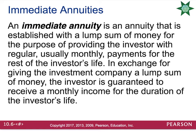An immediate annuity is an annuity established with a lump sum of money for the purpose of providing the investor with regular, usually monthly, payments for the rest of the investor's life. In exchange for giving the investment company a lump sum, the investor is guaranteed a monthly income for the duration of their life. You don't find a lot of average people doing this type of investment because you have to have quite a lot of money to give up front — perhaps a couple million dollars.